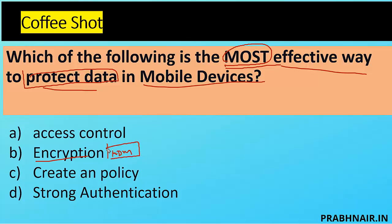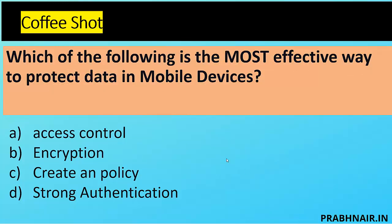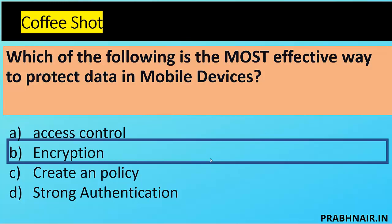If your mobile is protected with only a password, it's easy to bypass. But if the data is encrypted, even if you lose your device, it maintains persistent security. Always remember: whenever any exam question talks about data security, the answer is encryption. If encryption is not listed, the second-best option from an enterprise management point of view is MDM. In this case, the answer is encryption.